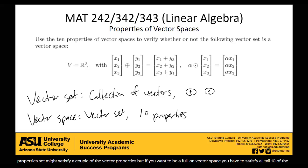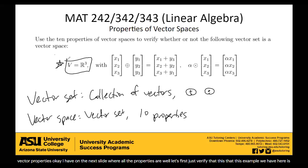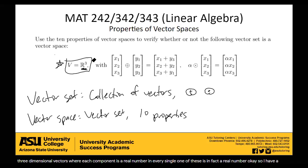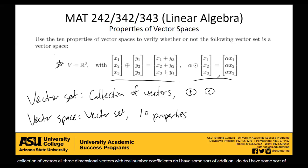Let's first verify that this example we have here is a vector set. It's a collection of vectors — they told me it's R3, the collection of all three-dimensional vectors with real number coefficients. The vector (2, a7/π, −√e) is in V because V is R3, and every single one of those components is a real number. I have a collection of vectors, some sort of addition, and some sort of scalar multiplication. So this example is, in fact, a vector set. To show whether or not it is a vector space, we need to verify all 10 vector space properties.